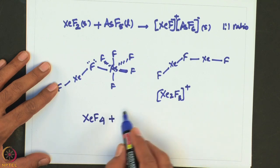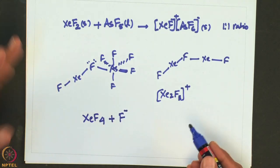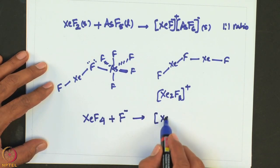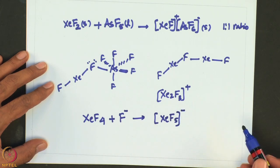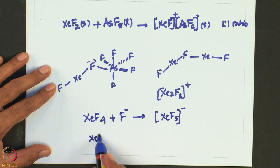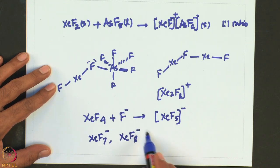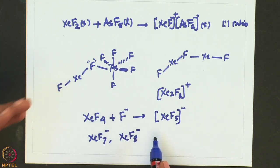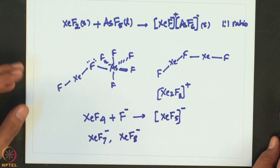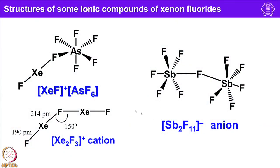Noble gas fluorides can act as fluoride acceptors or donors to give anions or cations. For example, XeF4 treated with fluoride ion donors such as cesium fluoride forms the [XeF5]⁻ anion. Similarly, [XeF7]⁻ and [XeF8]²⁻ are known, obtained from XeF6 and XeF7⁻ by adding 1 or 2 fluoride ions respectively.